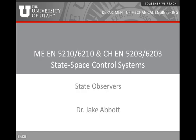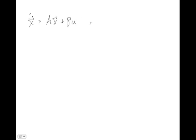Up until this point in recent videos we've been talking about using state feedback in order to effectively set our closed-loop system eigenvalues wherever we want. We've been talking about systems that look like x-dot equals Ax plus Bu, and we've said if we make u have a special structure — u equal to some reference value minus K times x — we have a matrix of scalar gains K times our state vector, giving us a new system whose A matrix looks like A minus BK. We can make that system have any eigenvalues that we want through choosing K.